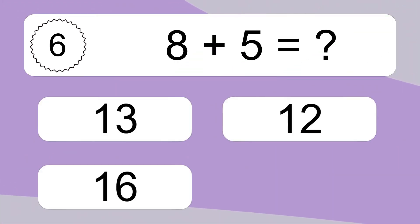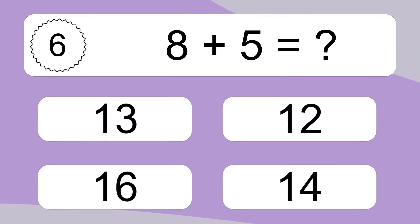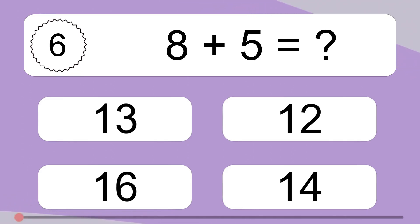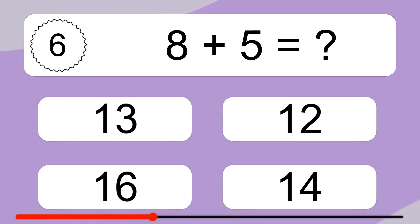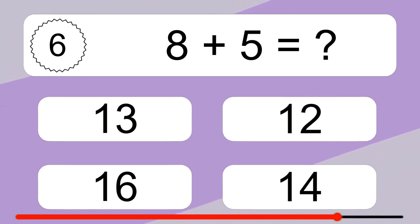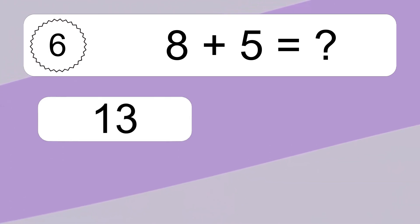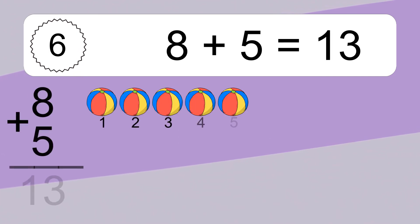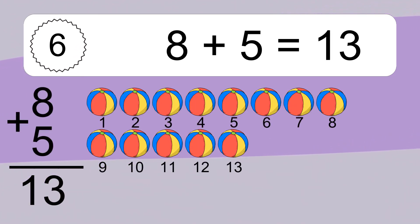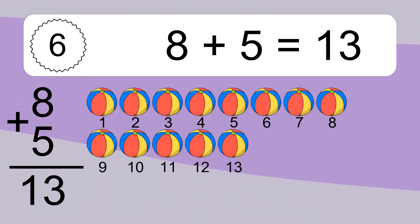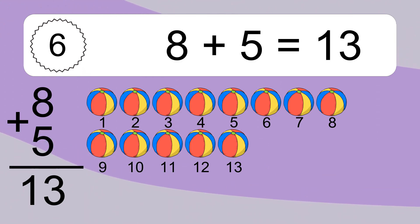8 plus 5 equals what? 8 plus 5 equals 13. Let's count it. 1, 2, 3, 4, 5, 6, 7, 8, 9, 10, 11, 12, 13.